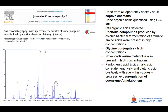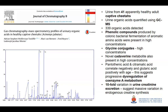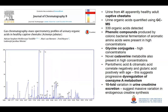Pantothenic acid and aconitic acid correlated negatively with age, whereas glutaric acid correlated positively with age in the captive cheetahs, pointing to some progressive dysregulation of coenzyme A metabolism. A significant problem from the start was a tenfold variation in urine creatinine excretion. Normally, metabolite concentrations are expressed relative to creatinine excreted. There is an age-related decline in creatinine excretion — similar to what we see in humans — often argued to be due to loss of muscle mass.